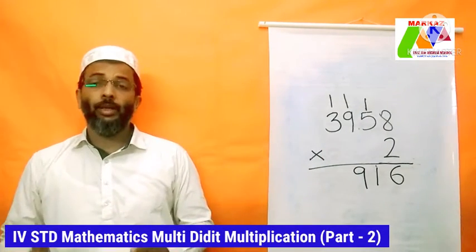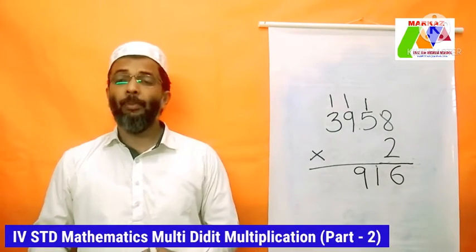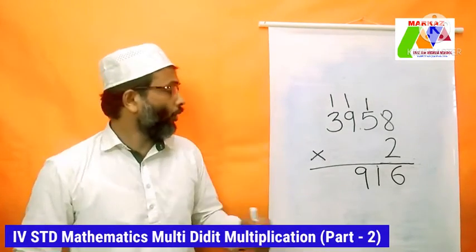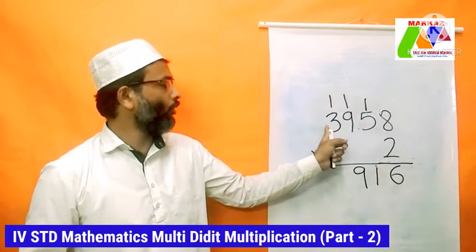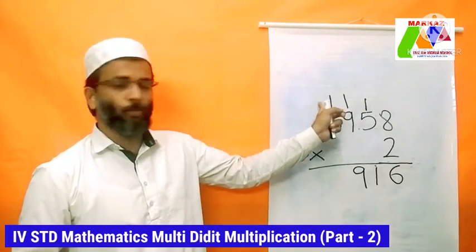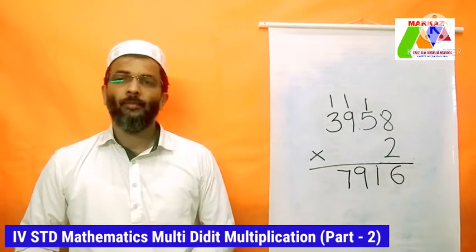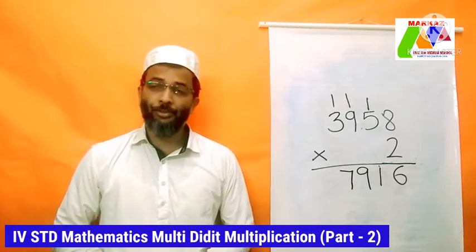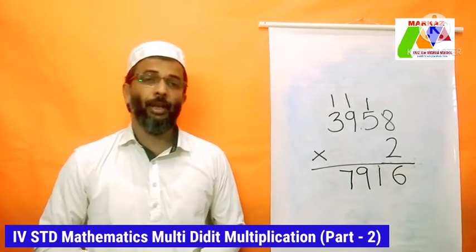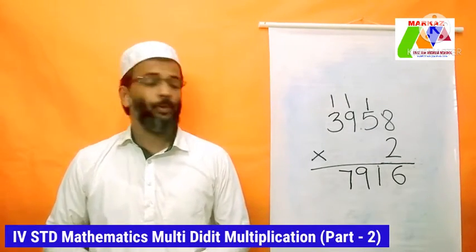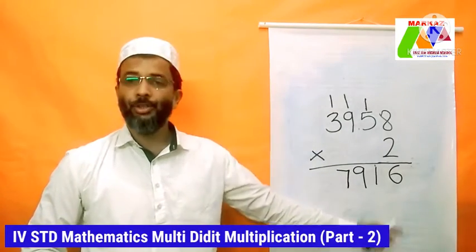Now it is time for the fourth and last step: 2 × 3 = 6, plus the carried 1 = 7. We have our final answer: 3,958 × 2 = 7,916.